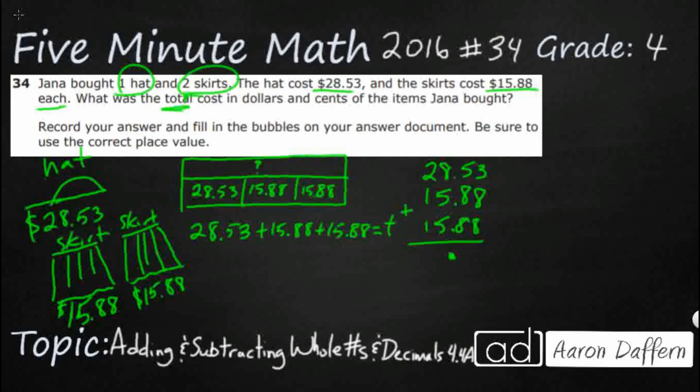8 and 8 is 16 again. And then let's add our 5. That's going to be 21. Add that 1. That's going to be 22.